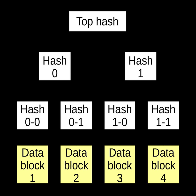Merkle tree from Wikipedia, the free encyclopedia at en.wikipedia.org. In cryptography and computer science, a hash tree or Merkle tree is a tree in which every non-leaf node is labeled with a hash of the labels of its children nodes. Hash trees are useful because they allow efficient and secure verification of the contents of larger data structures.